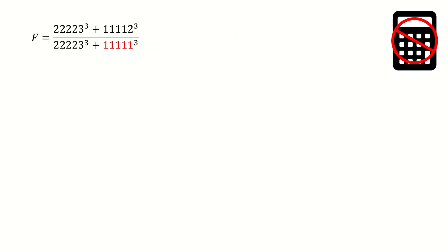Here is problem one. We want to calculate this fraction, but we are not allowed to use calculators. So we have to use some smart way to solve it. And if we look at this fraction, we can find some patterns for those numbers. So we define A as this red number.